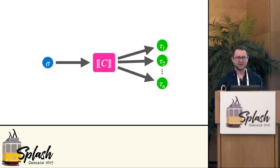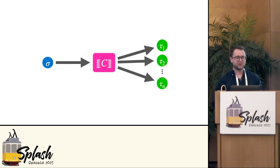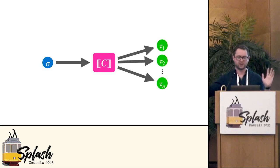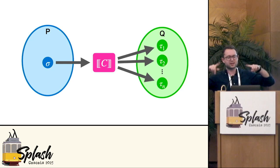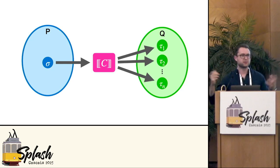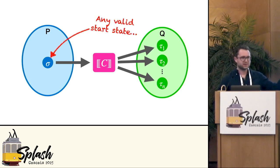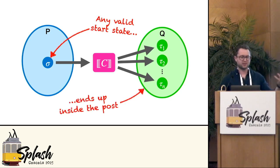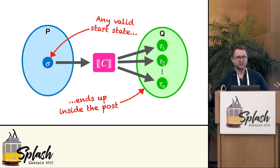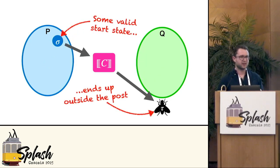To see this more pictorially, let's look at the semantics of a non-deterministic program. You start in some state sigma and then you may end in one of many states tau. What Hoare logic allows you to do is draw circles around the valid start states and the end states, and you use those pre and postconditions to describe the behavior of the program — any start state in the blue circle will end up inside the green circle when the program executes. Given that this is what we call correctness, you could ask: what is incorrectness? Incorrectness should be the logical negation of this, which means there is some valid start state that's going to end up outside of the postcondition.